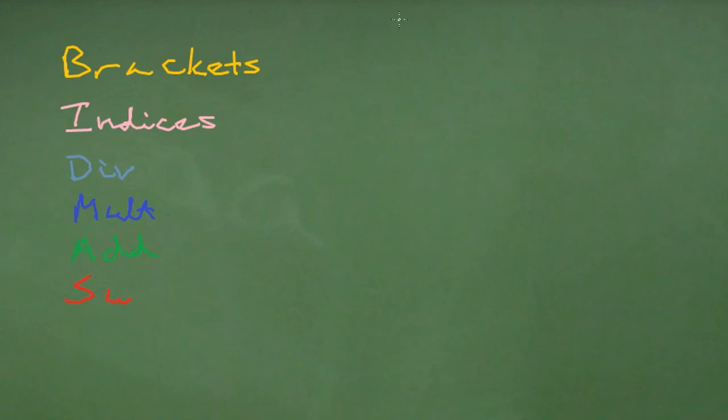So let's take a look at one more slightly more complicated example. We have 2 multiplied, and then in brackets, by 3 plus 2, divided by 5. So looking at the top of the list of what we have here, brackets always come first, and we can see that we've got brackets here. The 3 plus 2 is inside the brackets or inside the parentheses.